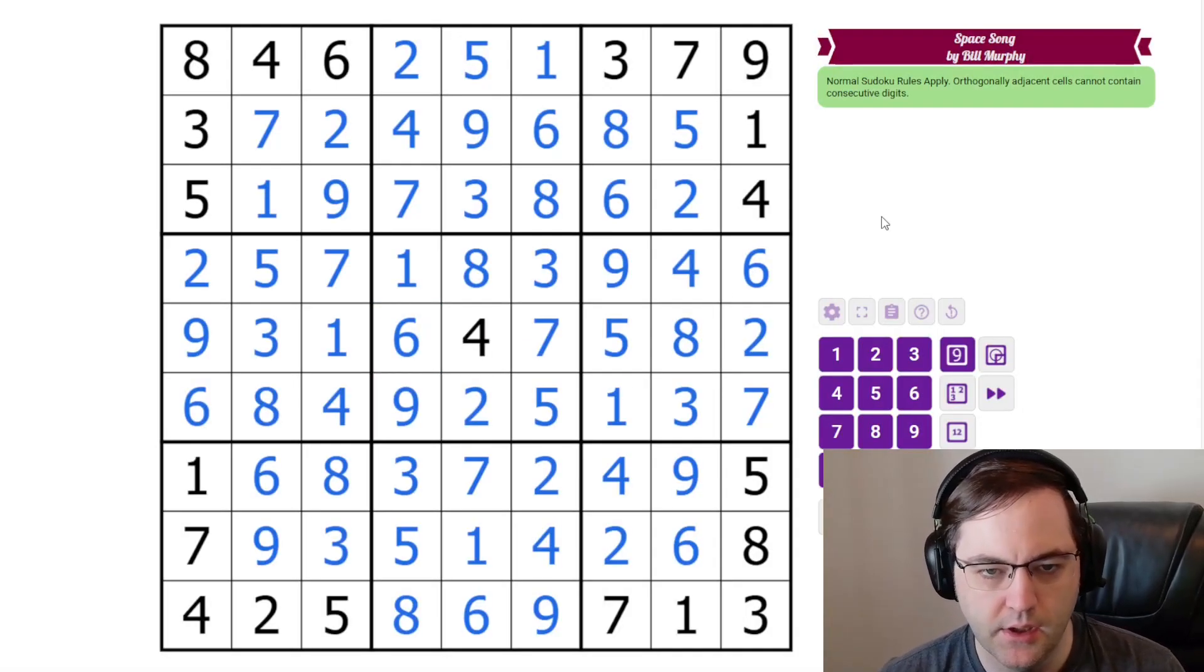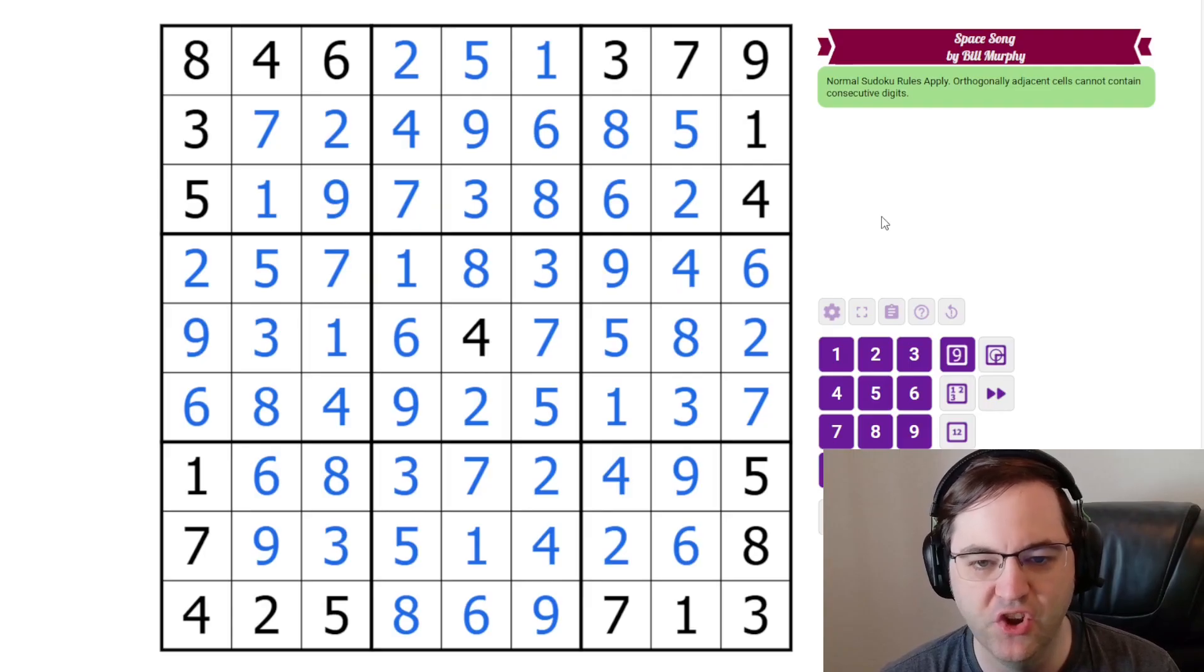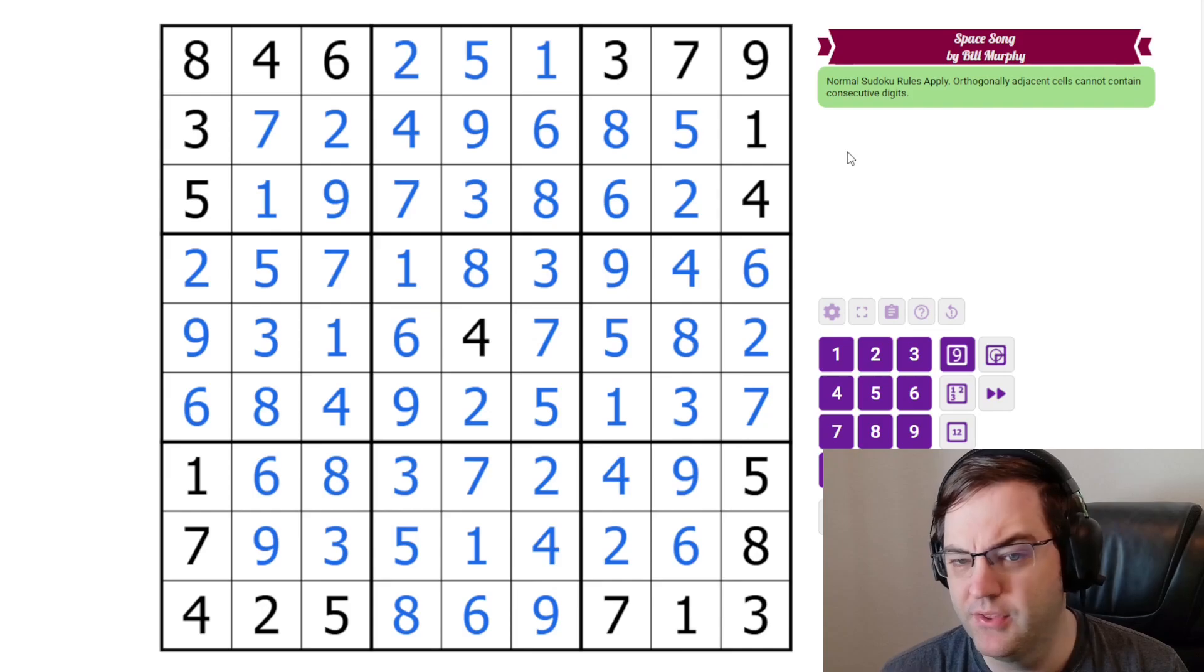So, yeah. That's the solution. I mean, these are classic, non-consecutive tricks. And Bill has just built this puzzle with them. So, it's a very nice flow to it. Really enjoyed that one. That's the second negative constraint puzzle that we've done in a row of Bill's. Yeah. Let us know what you think about those.